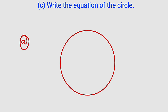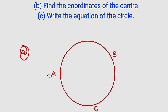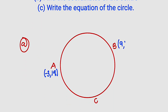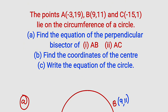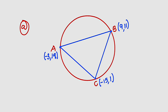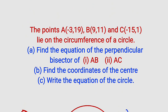Suppose we have a circle like this. According to the question, there are three points on this circle — let's call them A, B, and C. For A we have (-3, 19), B we have (9, 11), and C which is (-15, 1). We have learned that ABC is a triangle, so let us connect the points.